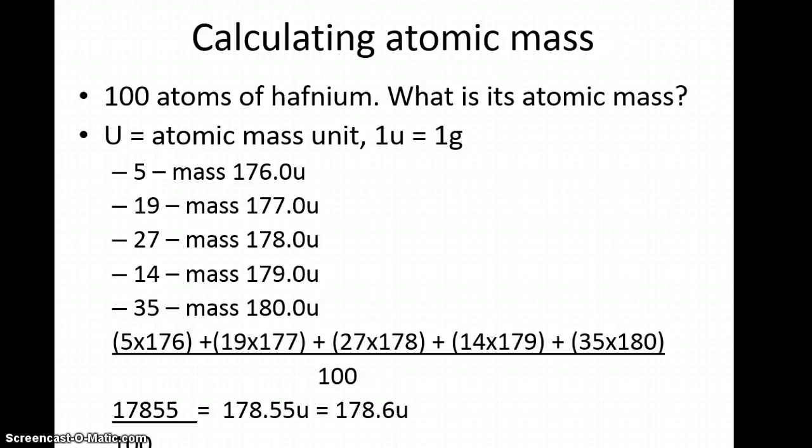We have 19 atoms with mass 177.0u, 27 with mass 178.0u, 14 with mass 179.0u, and 35 with mass 180.0u. So there are five isotopes of hafnium, each with their own mass because they have different numbers of neutrons.